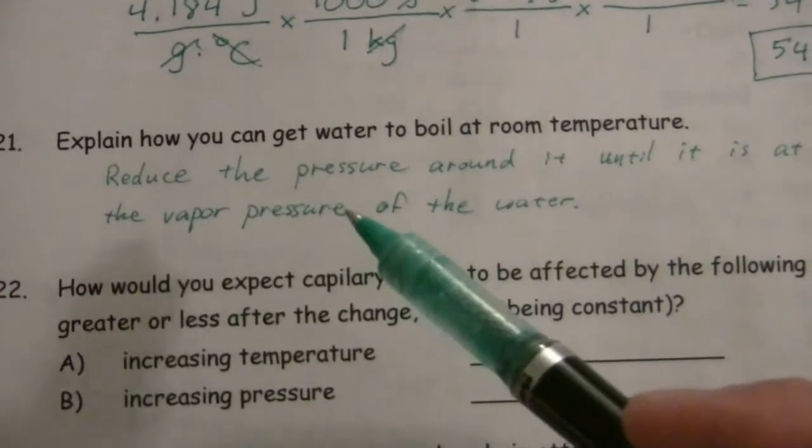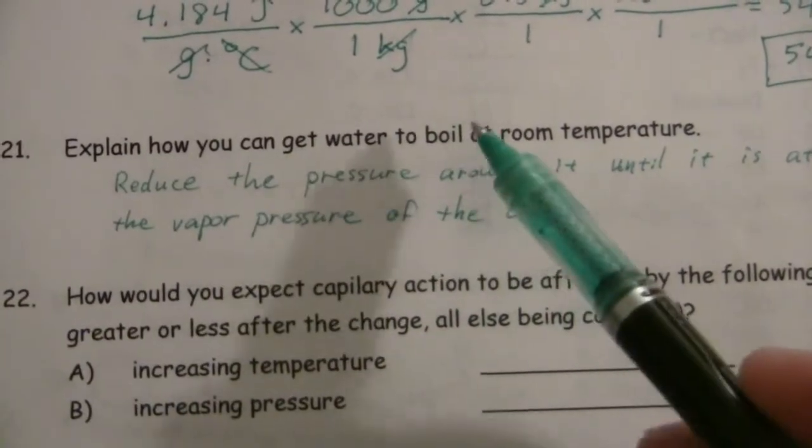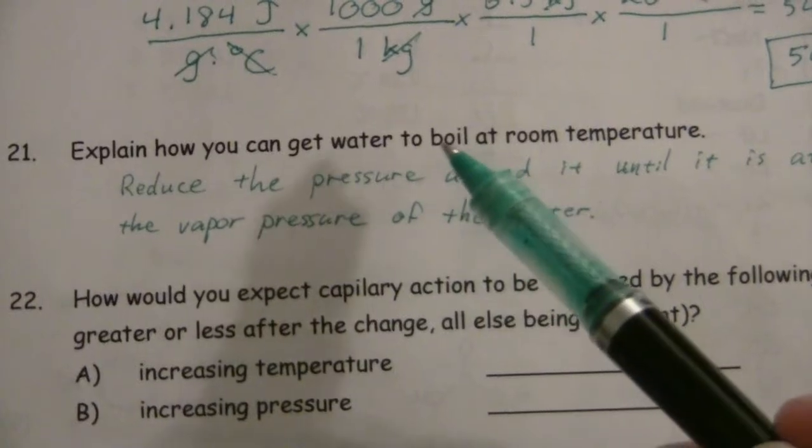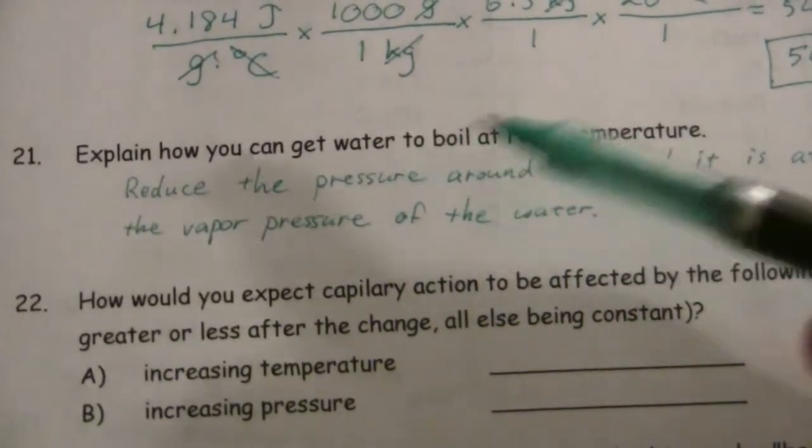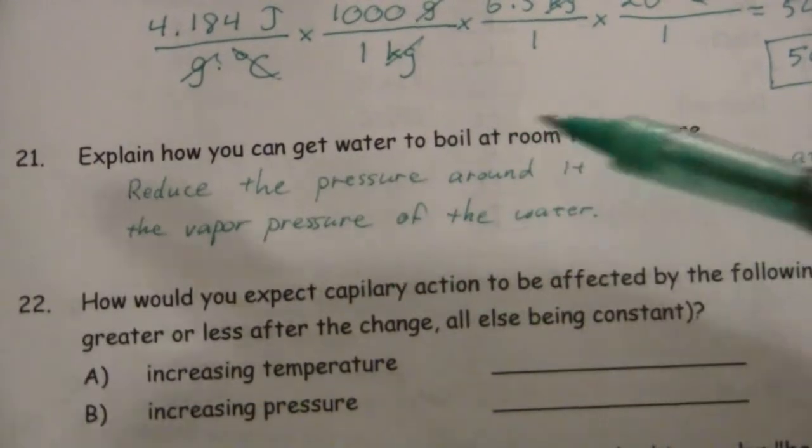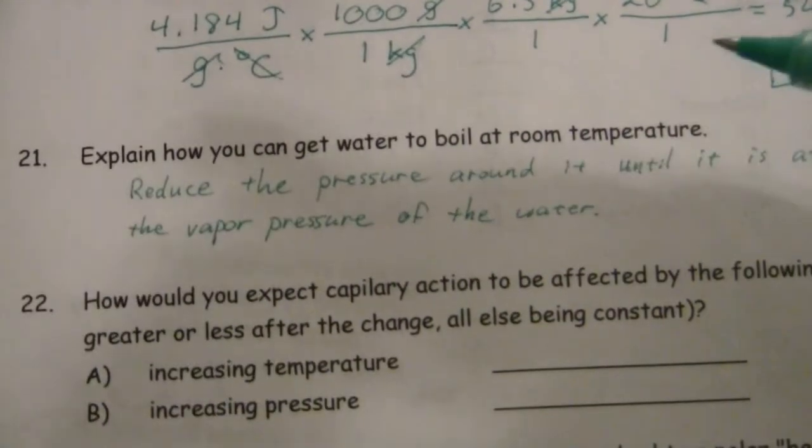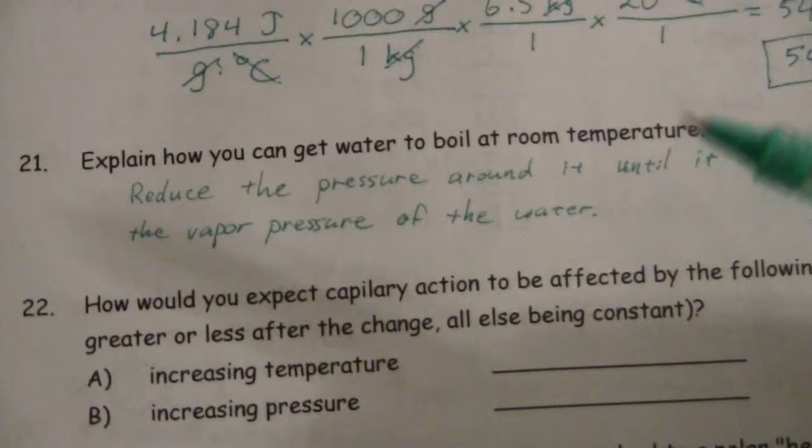All right, this is where we're looking at what is the boiling point, how is it defined, and that is defined by the vapor pressure. When the vapor pressure equals the atmospheric pressure, it'll boil.